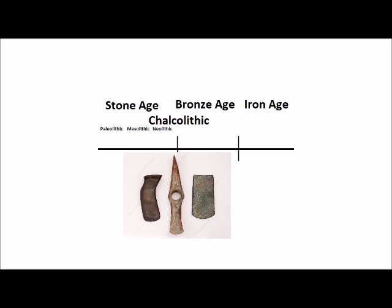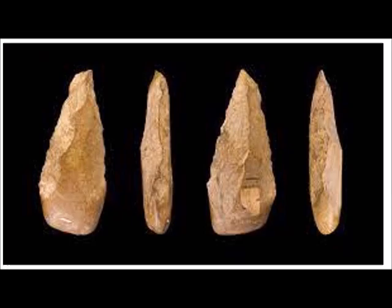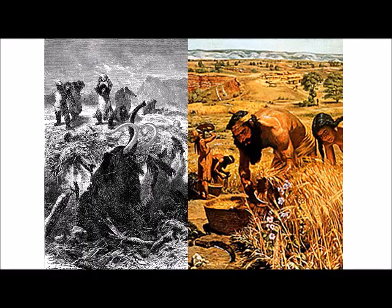Sometimes we think of Stone Age people as being stupid and uncouth, but from their art we can tell that they actually expressed a lot of the same hopes, fears, and dreams that we do in modern times, especially by the later part of the Stone Age. Relatively early in the Stone Age, humans learned to control fire and made use of primitive stone tools. By the Neolithic, humans began to domesticate plants and animals and started to make the transition from a hunter-gatherer, nomadic lifestyle to a sedentary agricultural lifestyle.